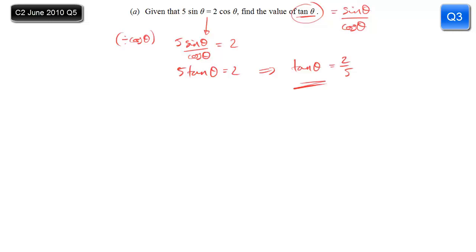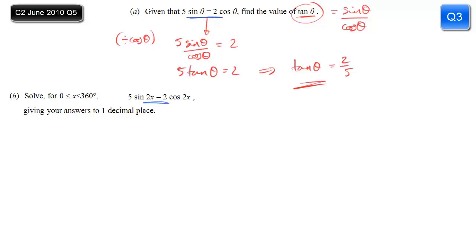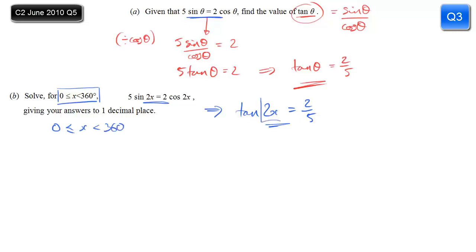So that's part A. Part B, we're now asked to solve 5sin2x equals 2cos2x. We can spot the similarity between part A and what we've got here - the only difference is that we replaced θ with 2x. So just like tanθ was 2/5, I can now say that tan2x is equal to 2/5. That's a fairly straightforward equation to solve now. We need to be careful of the range of values: if x is going to be in the range 0 to 360, then 2x would need to be in the range 0 to 720.